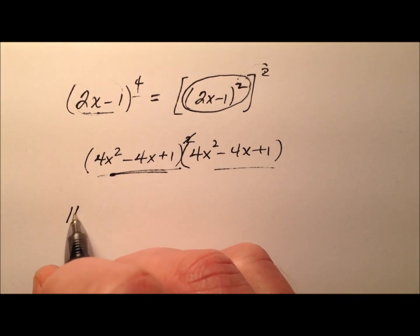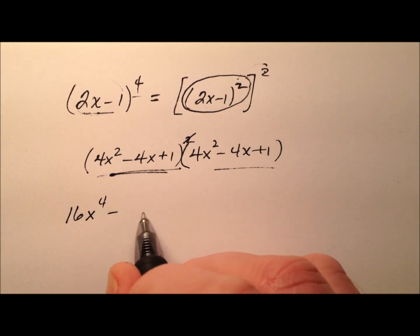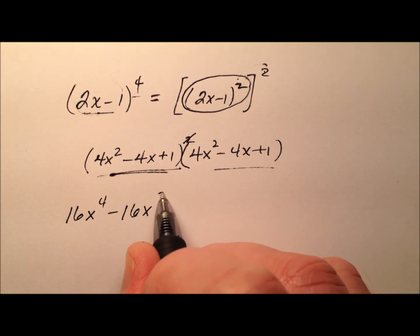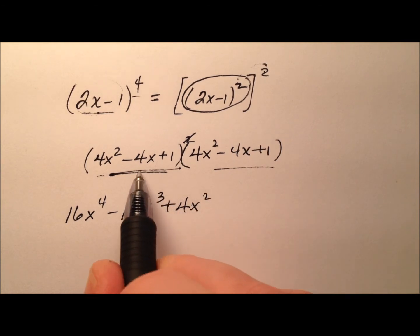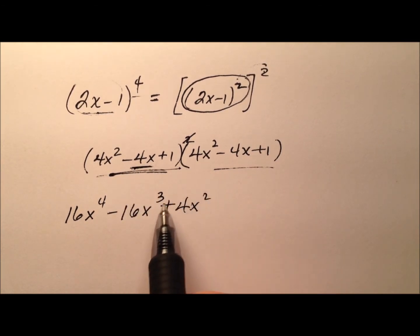Looks like I have 16x to the 4th minus 16x cubed plus 4x squared, and then let's push this negative 4x through.